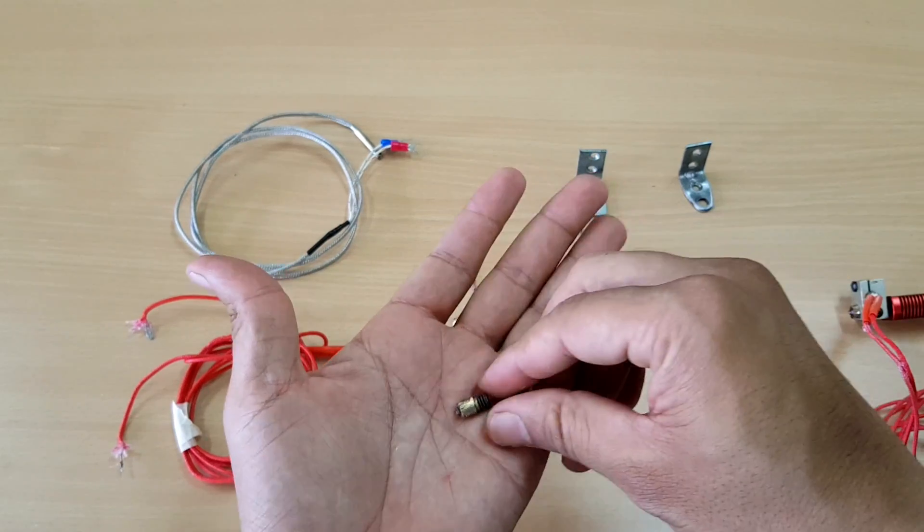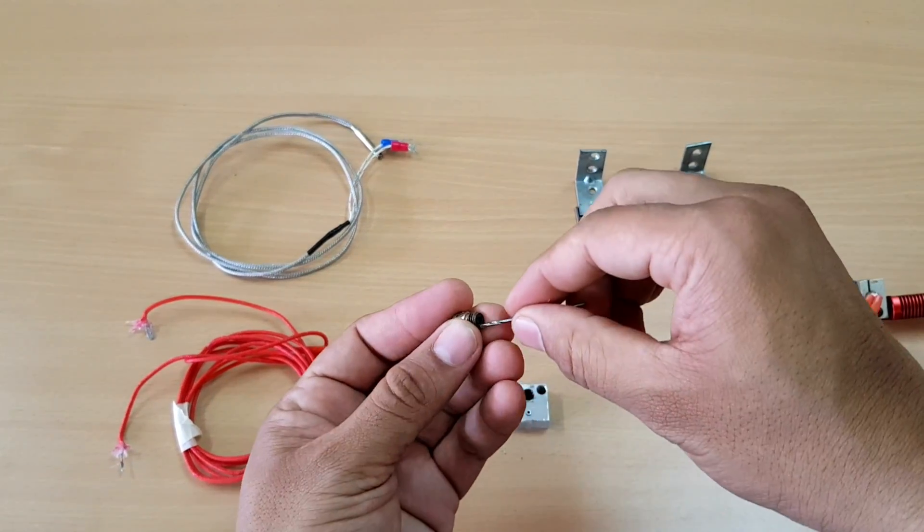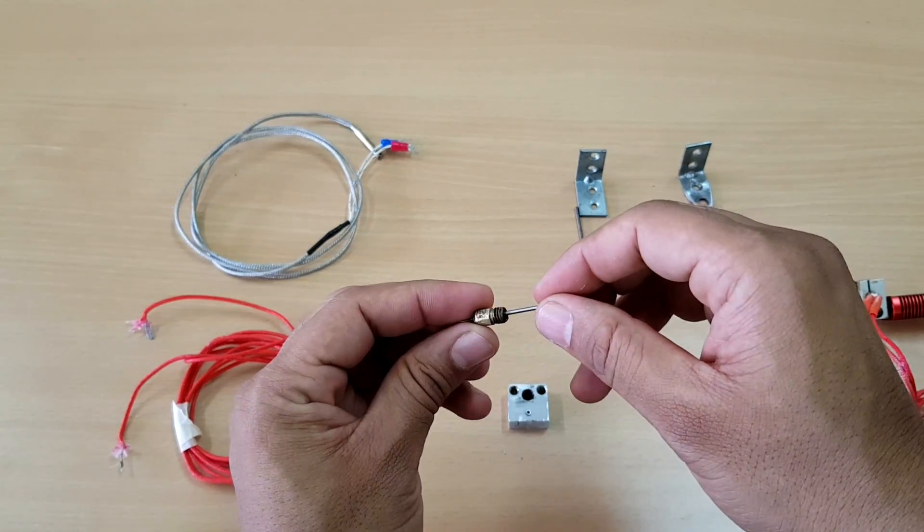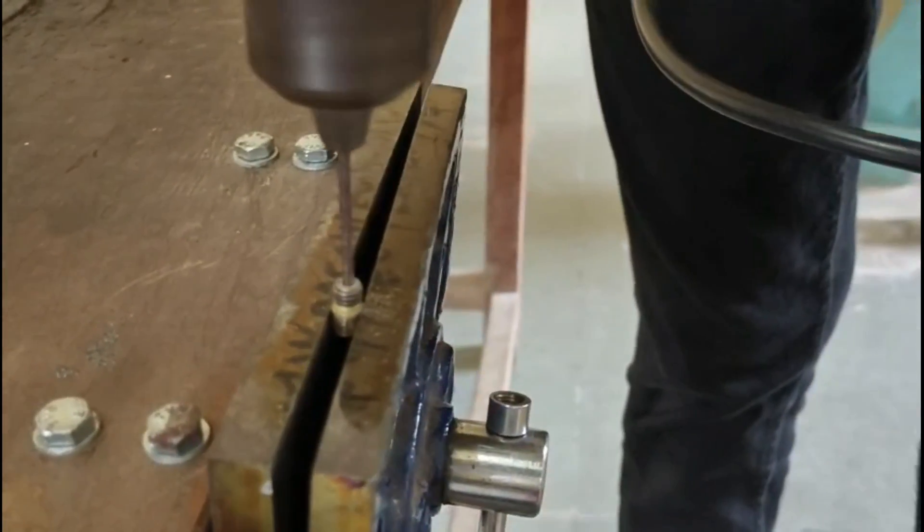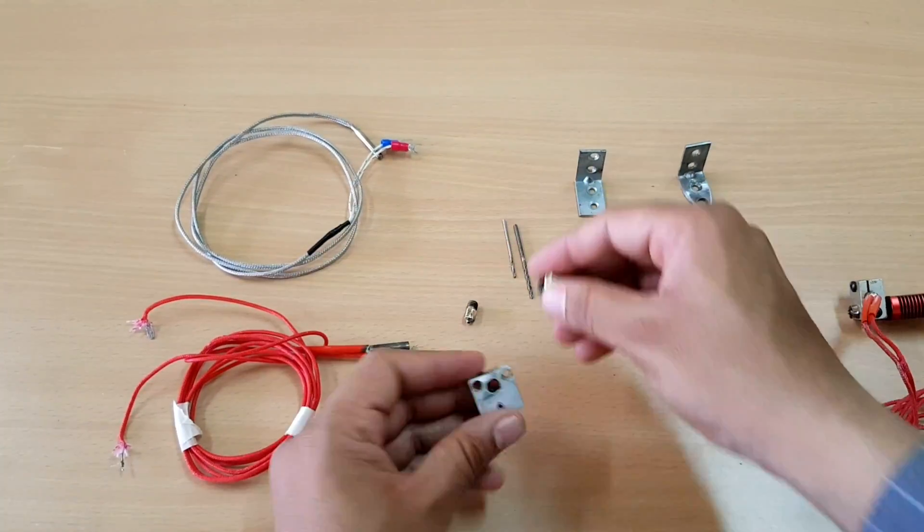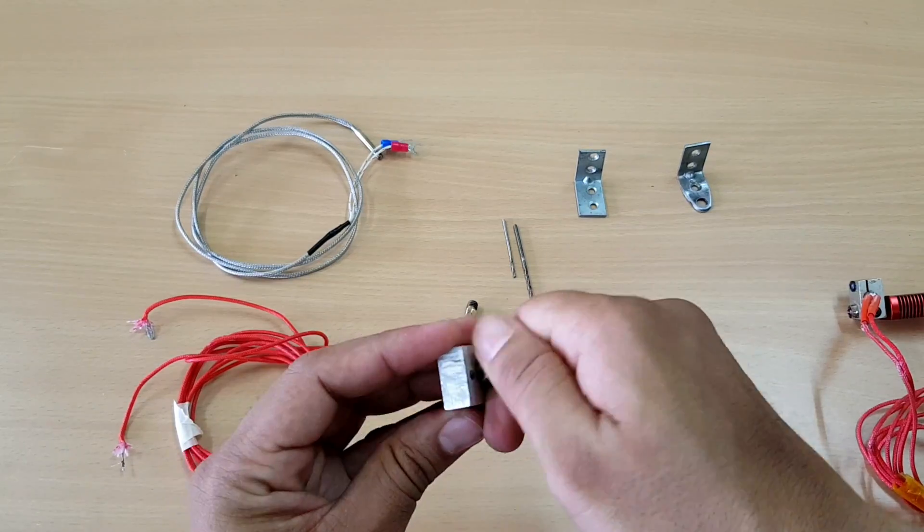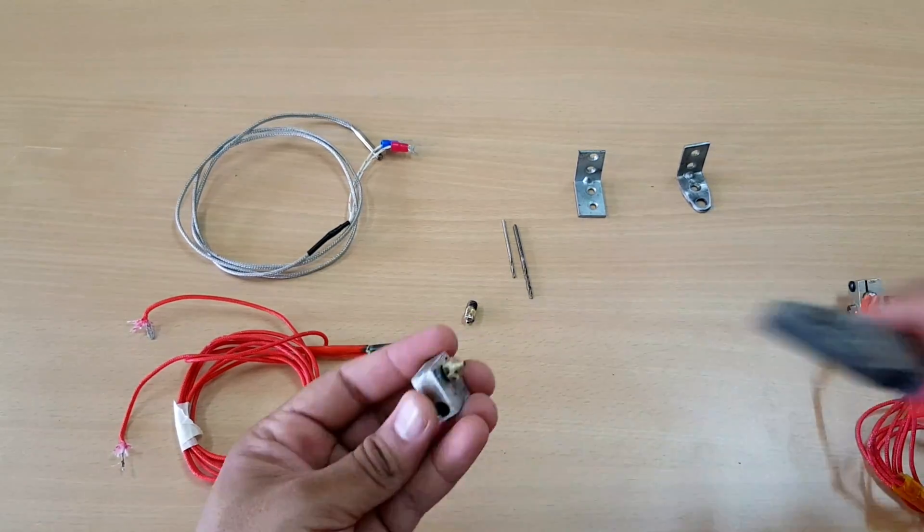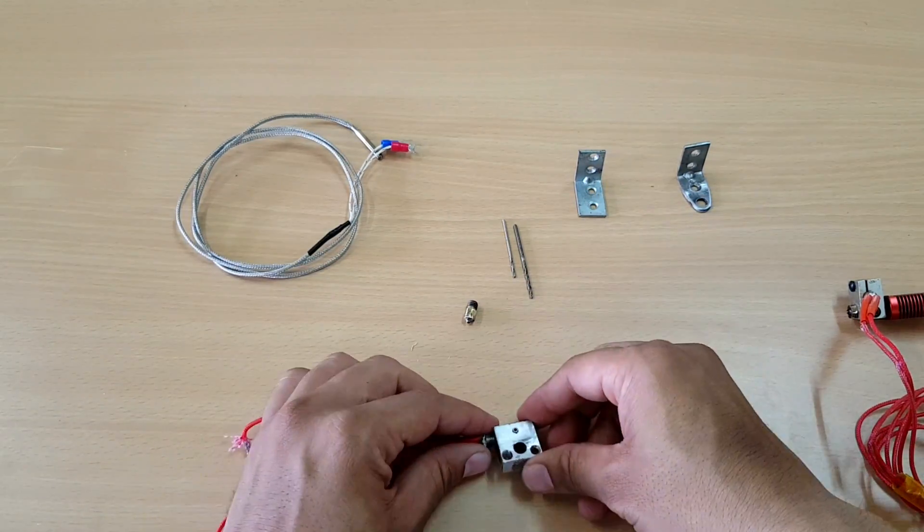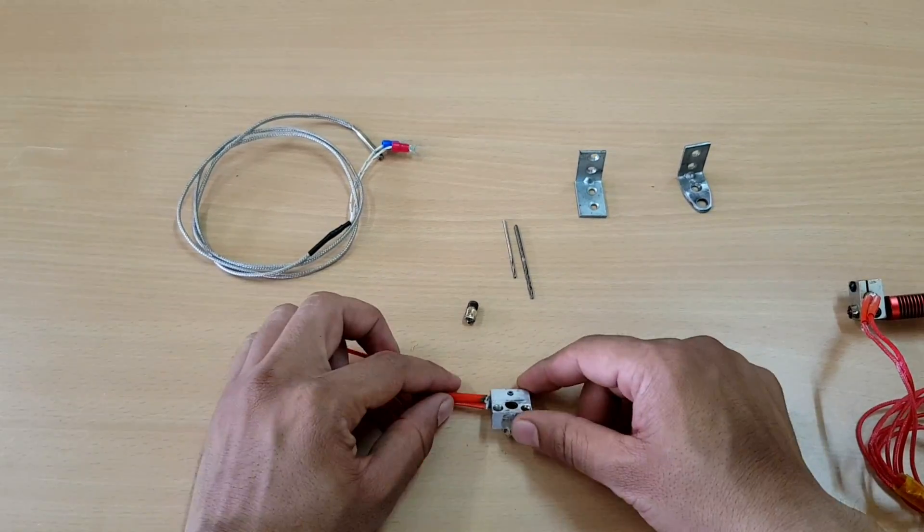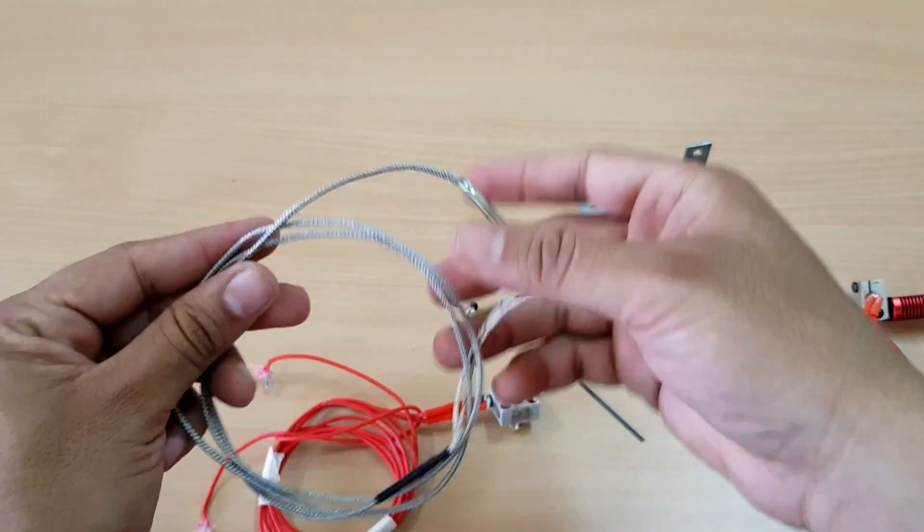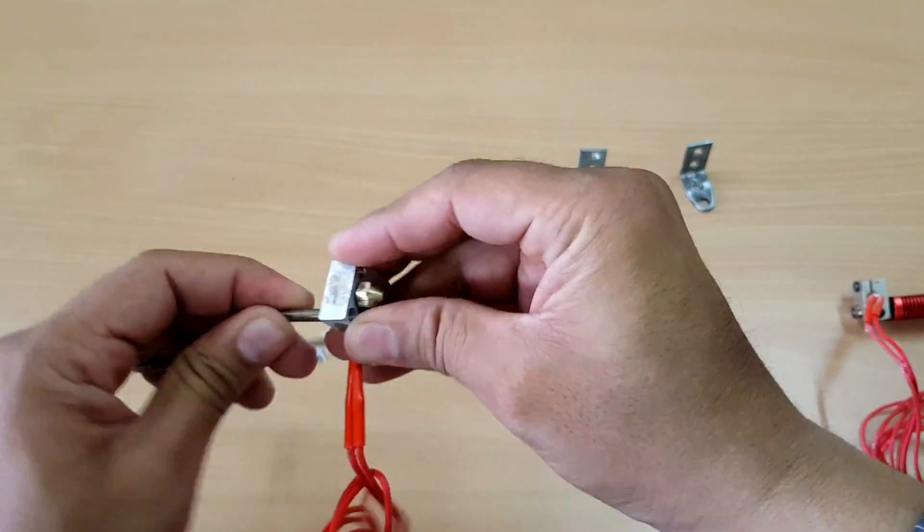This nozzle has 1.5mm hole at the bottom. You can also drill 3 to 4mm hole on the other side from where the strip enters the nozzle, as shown in the video, up to half the length of nozzle.